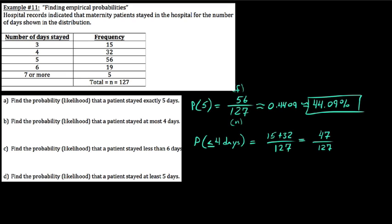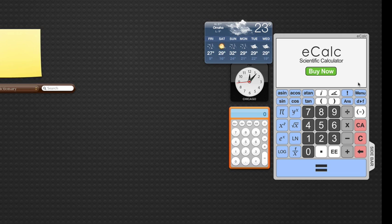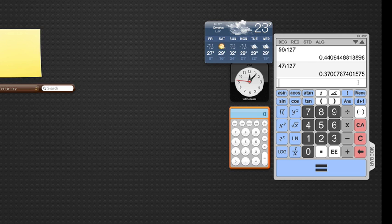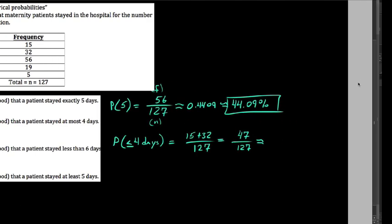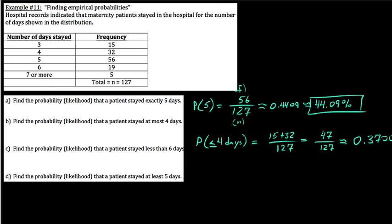Instantly, I know this is going to be less than the last percentage we just found, because it was 47 of 127, that's less than 56. So 47 divided by 127. We get our decimal here. About 0.3700, which is within reason. So 0.3700, approximately 37% chance that somebody in the future may stay at most four days.